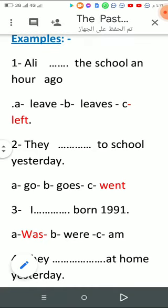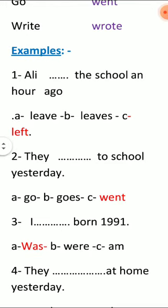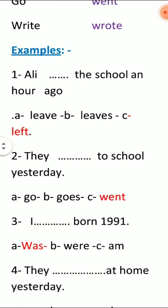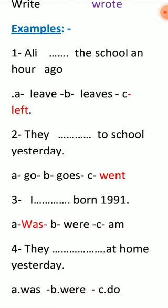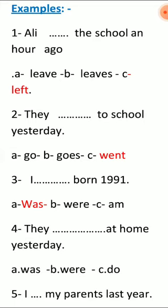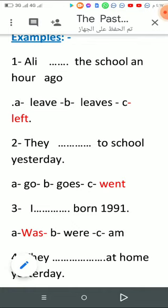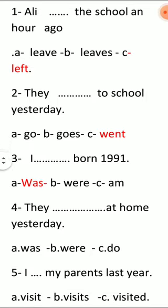إذا ما عرفنا نستخدم نظرية الاستبعاد. مثلاً عندنا leaves وleaves. ذكرنا في القاعدة العامة أن الفعل يأخذ S أو لا يأخذ S: إذا بدأ بـ he/she/it الفعل يأخذ S، وإذا بدأ بـ I/you/we/they والـ plural nouns لا يأخذ S. يبقى الاثنان يعبران عن الحاضر فهما مستبعدان. الإجابة الصحيحة هي الفعل الماضي.